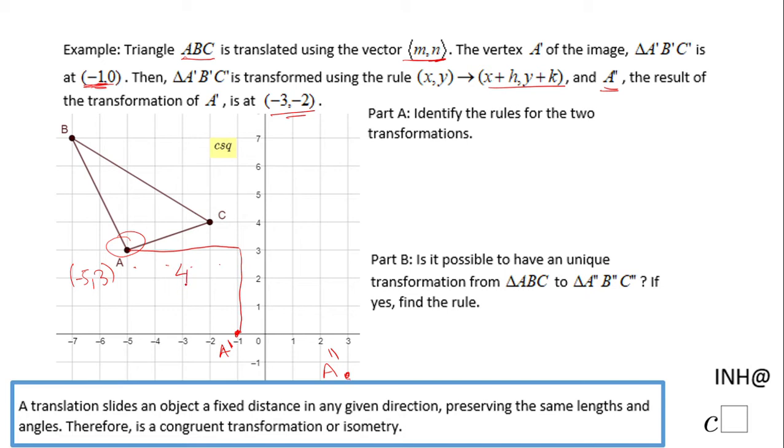So basically the first transformation will be (x, y) becomes (x + 4, y - 3) because we move right plus 4 and down minus 3. This is the first transformation which goes from ABC to A'B'C'.